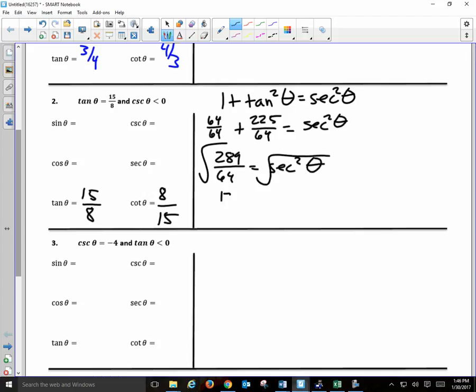289 over 64 is equal to secant squared. Root it, 17 over 8 plus or minus is equal to secant of theta. Oh, no. How do I decide whether it's positive or negative? Let's check out the quadrants. Is tangent positive or negative? Tangent's positive. In which quadrants is tangent positive? 1 and 3.